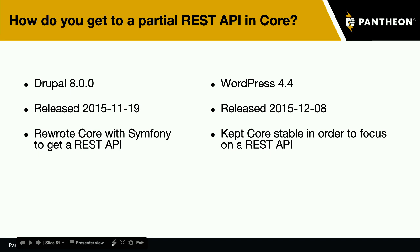What we heard at the beginning of the Drupal 8 cycle was that in order to get a clean REST API, we should break backwards compatibility, add Symfony components, and introduce an object-oriented architecture that would make a REST API much better and easier to maintain long-term. WordPress did not do that, and they still got to a REST API at the same time. So it's worth asking what do we really mean? Larry writing in 2012, around the time the REST API was getting architected, emphasized that backwards compatibility is something that should be designed for — you can't just have backwards compatibility. Backwards compatibility will be a lot easier to maintain in Drupal 8 than in WordPress, but it's difficult yet they've just done it.